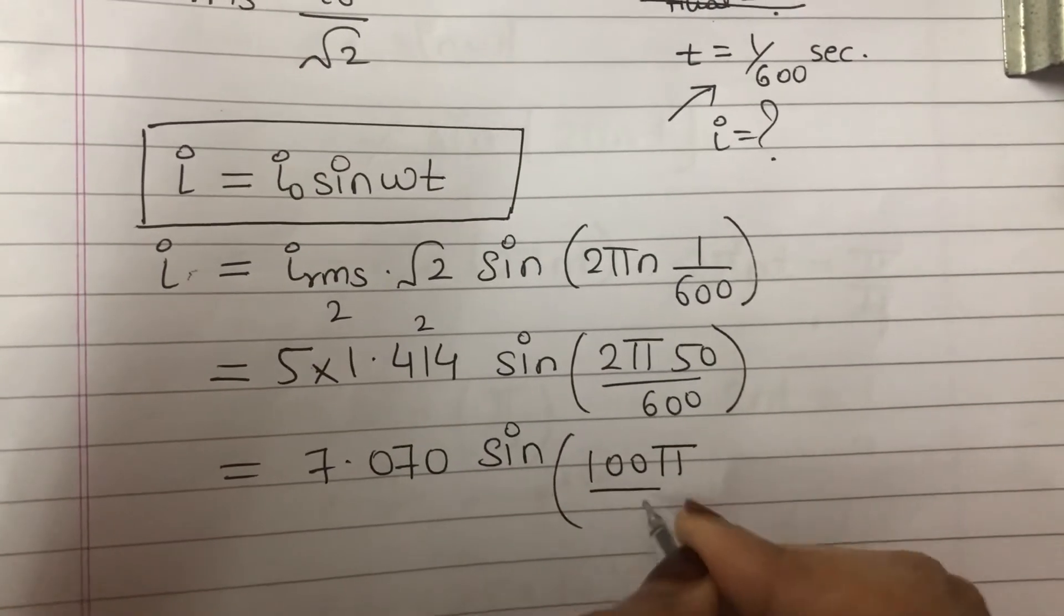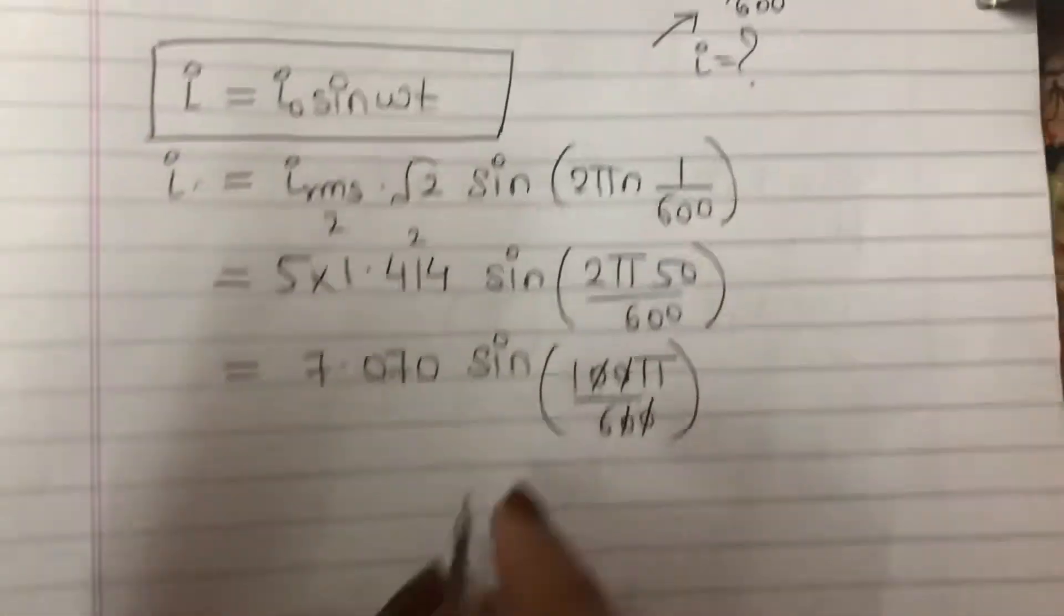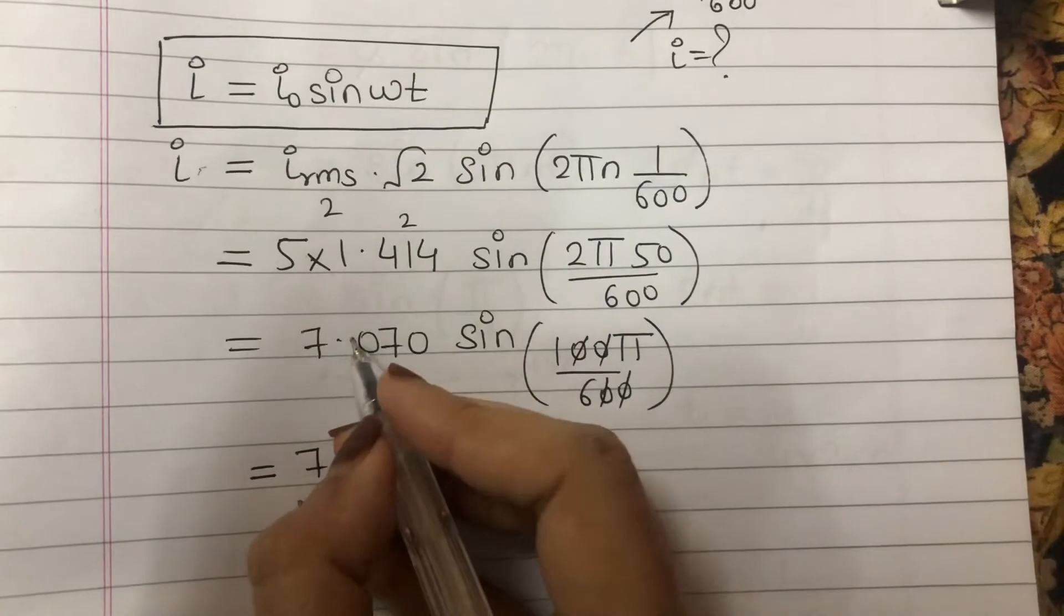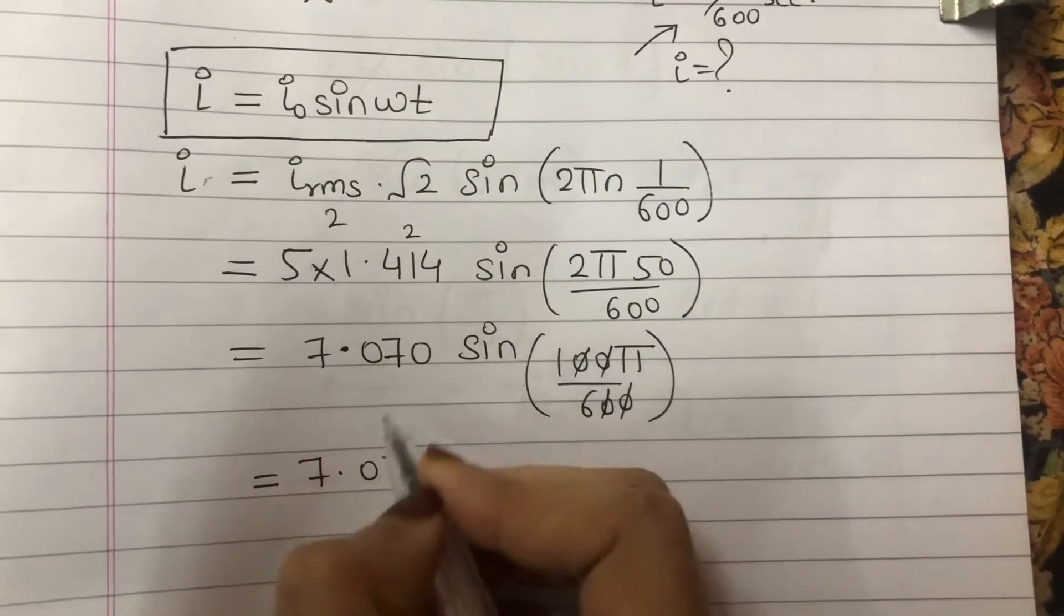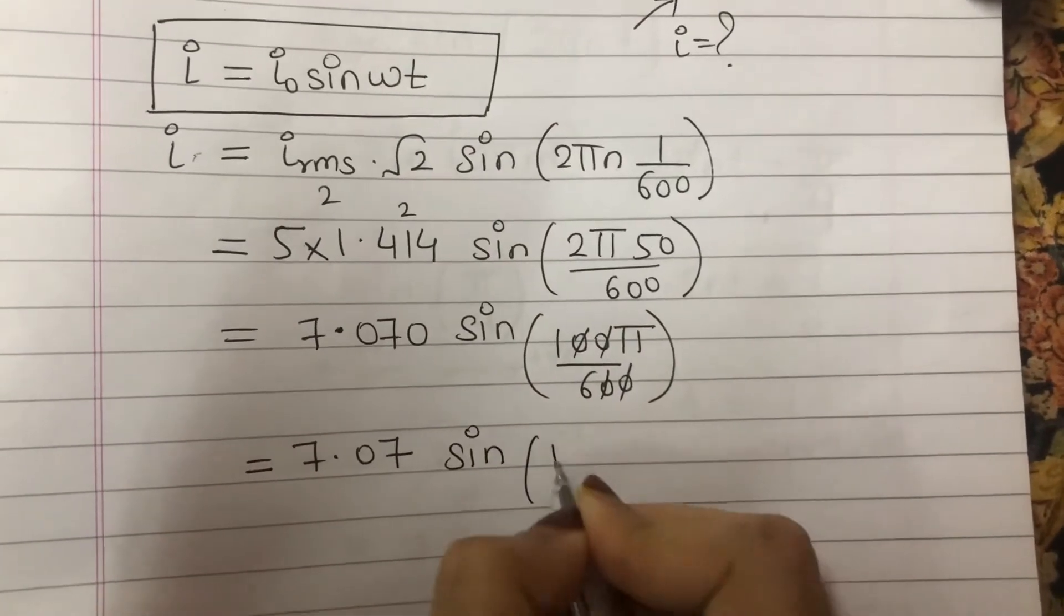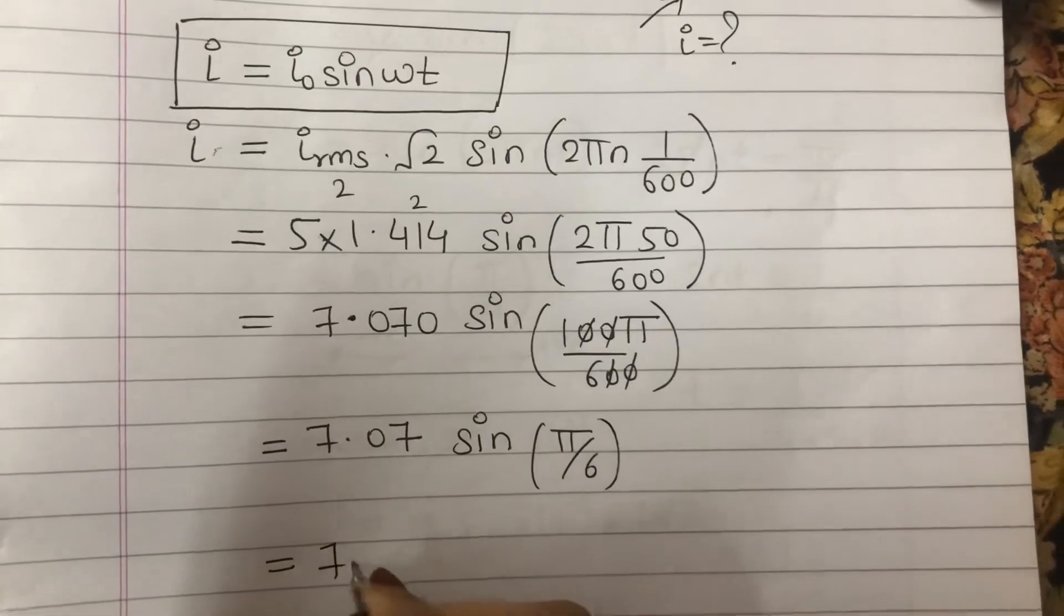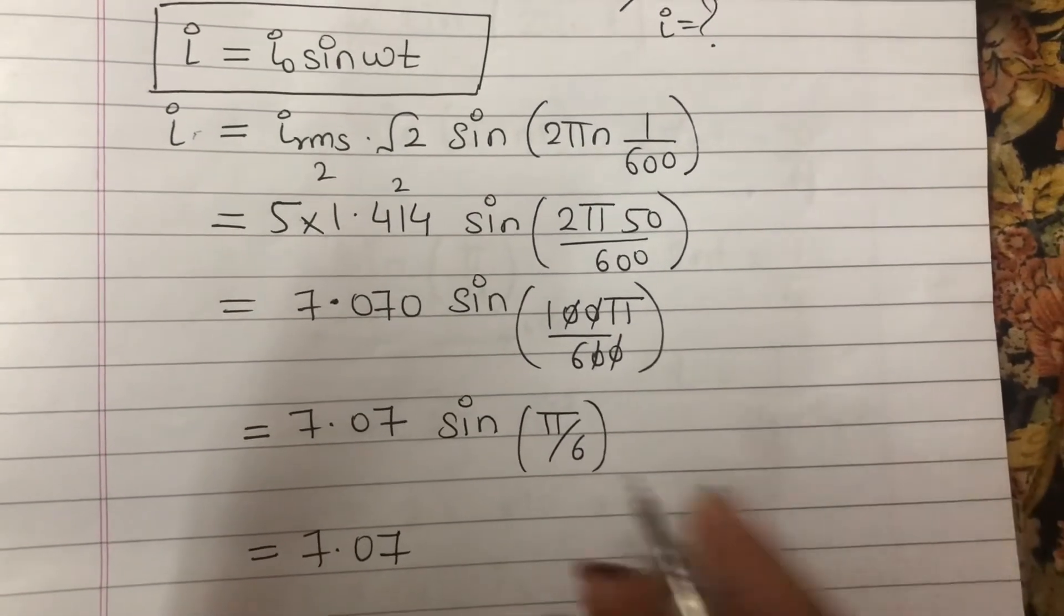So 7.07 sin pi upon 6. Pi upon 6, so 7.07, sin pi upon 6 is 1 upon 2.